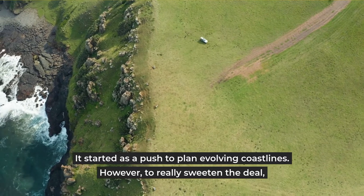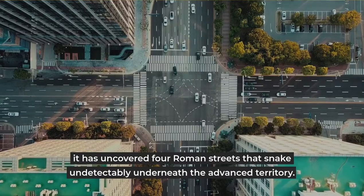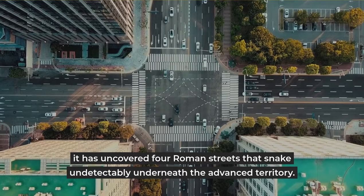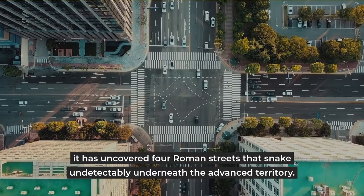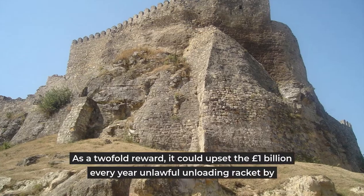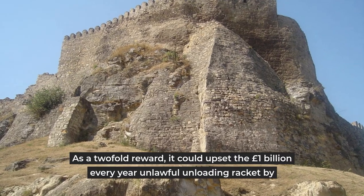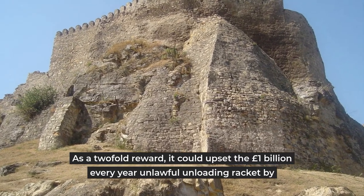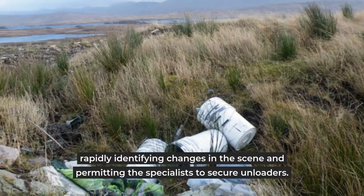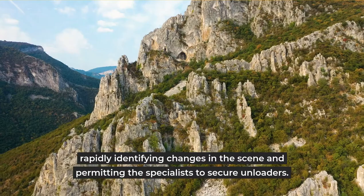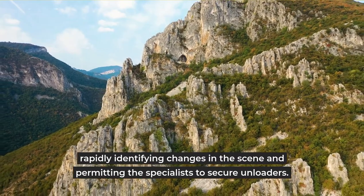However, it has revealed four Roman roads that snake invisibly beneath the modern terrain. As a double bonus, it could disrupt the £1 billion every-year illegal dumping racket by quickly detecting changes in the landscape and allowing the authorities to catch dumpers.